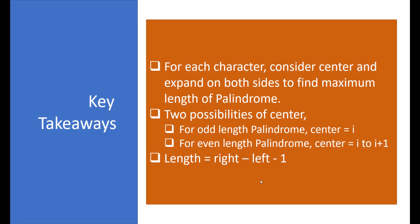So what are the key takeaways? The key takeaways for this question would be for each character, you can consider the center and expand on both sides to find the maximum length of the palindrome for that center. Now, for center, there can be two possibilities. One, that you can check for a palindrome of odd length wherein the center would be the ith index. And for even length palindrome, the center would be consisting of i and i plus 1 index.